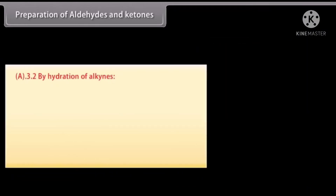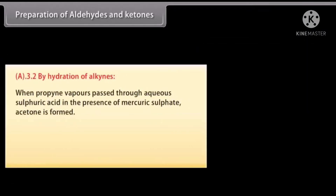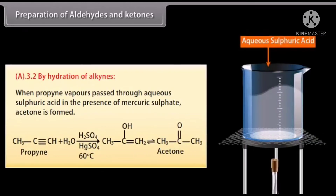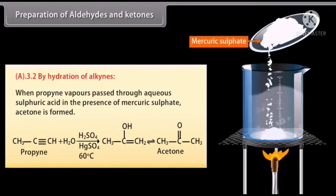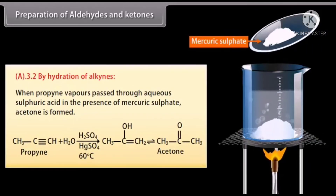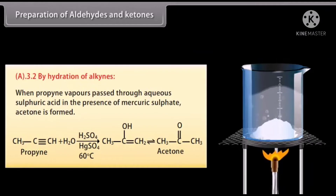By hydration of alkynes: when acetylene vapors are passed through aqueous sulfuric acid in the presence of mercuric sulfate, acetaldehyde is formed.